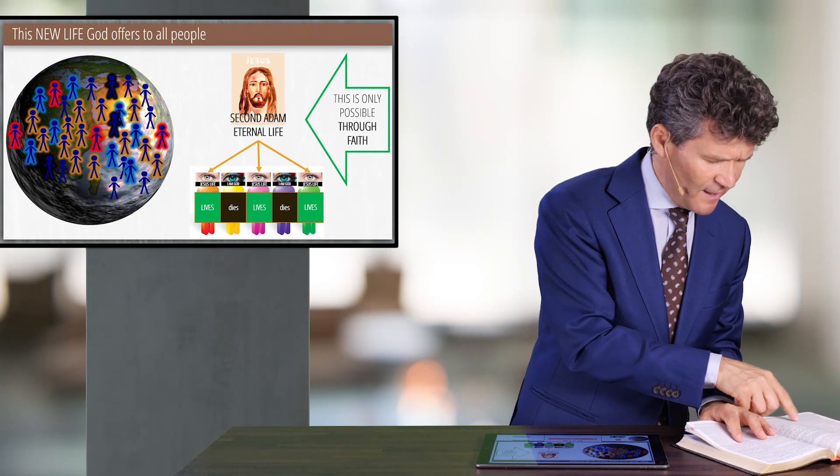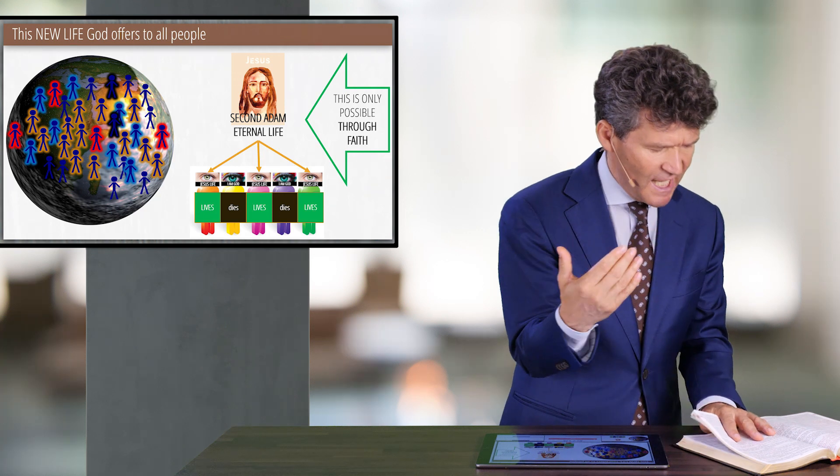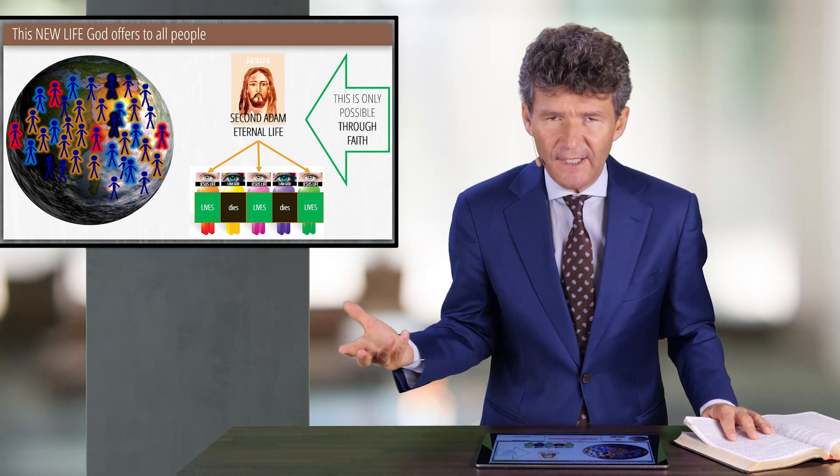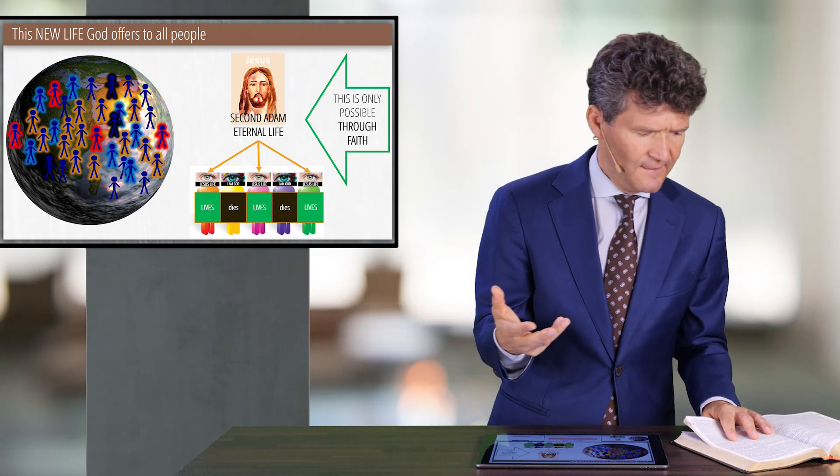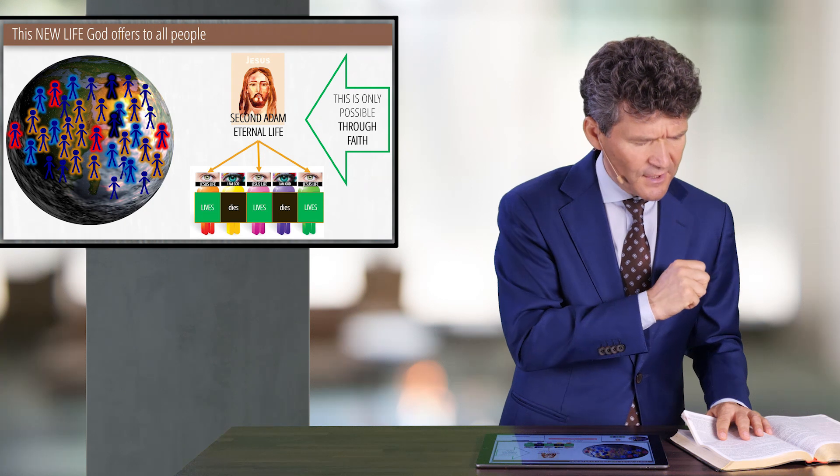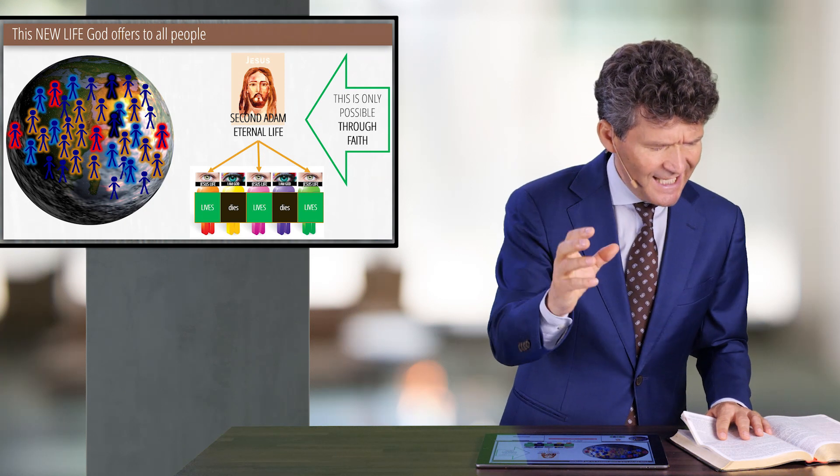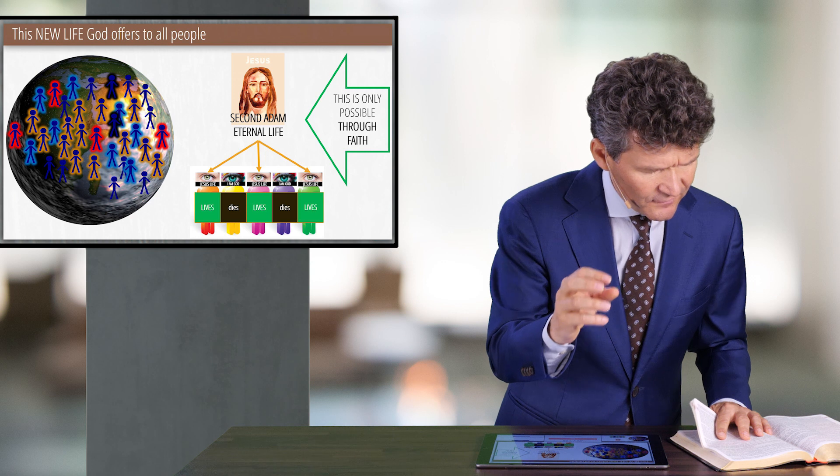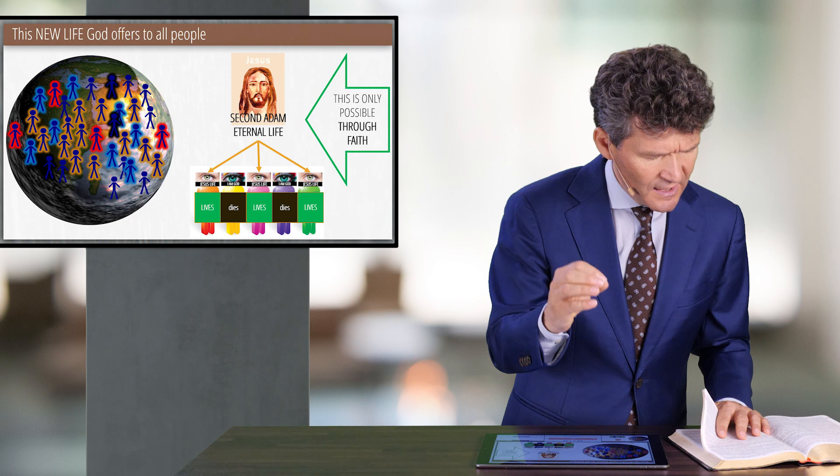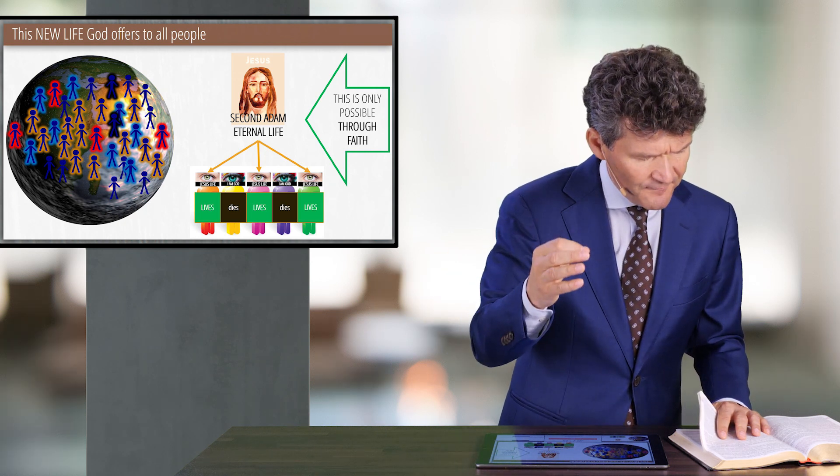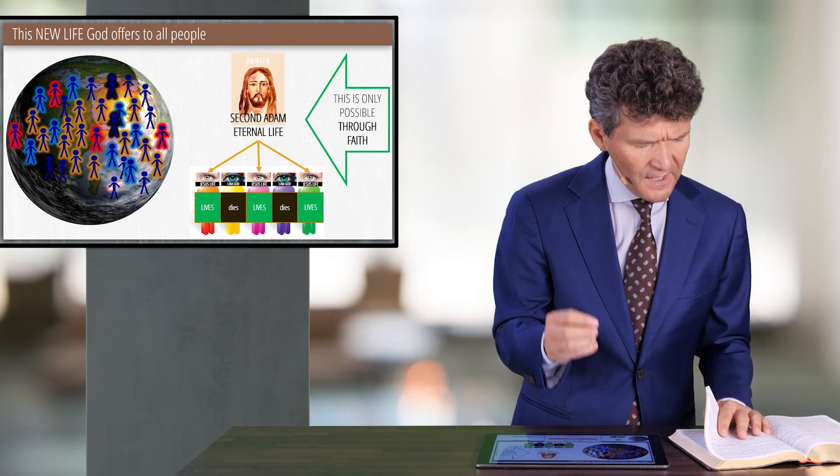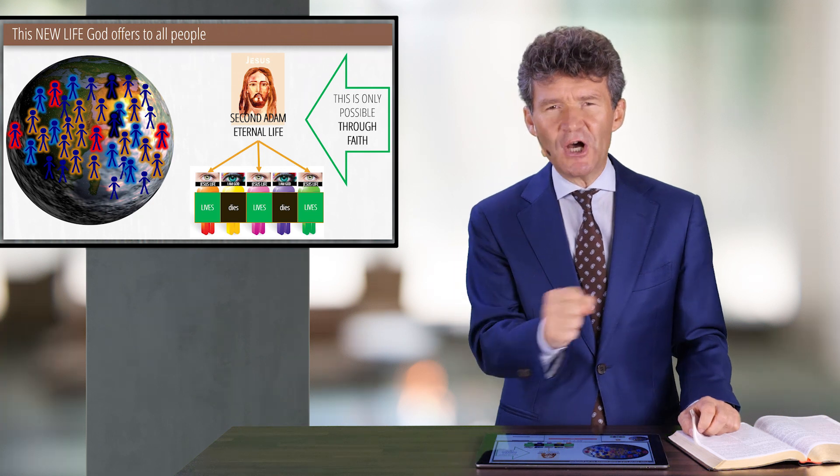But he that believeth not is condemned already because he has not believed in the name of the only begotten Son of God. That is, he has not the identity of the life of Christ. And this is the condemnation that light is come unto the world and men love darkness rather than light because their deeds were evil. For everyone that does evil, hateth the light, neither cometh to the light, lest his deeds should be reproved. But he that does truth cometh to the light, that his deeds might be made manifest, that they are wrought in God.